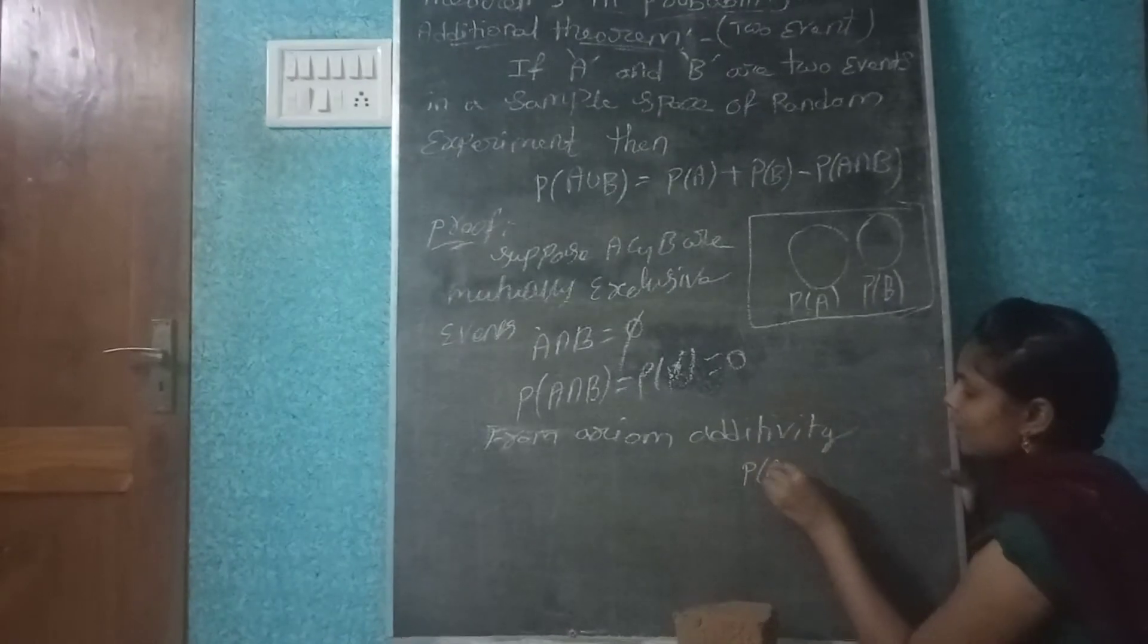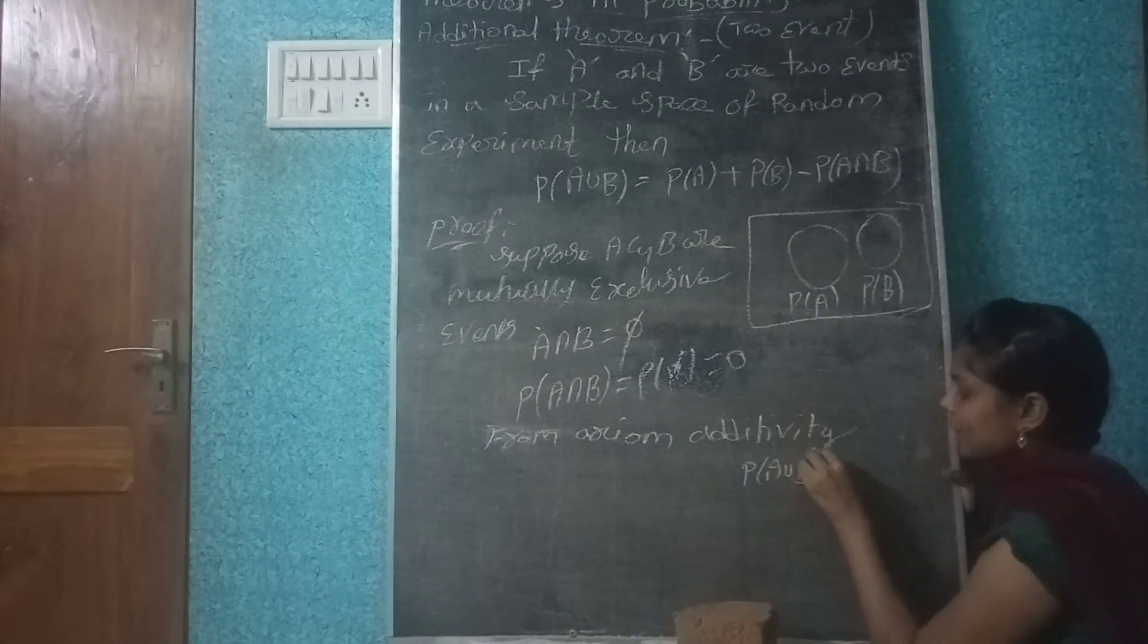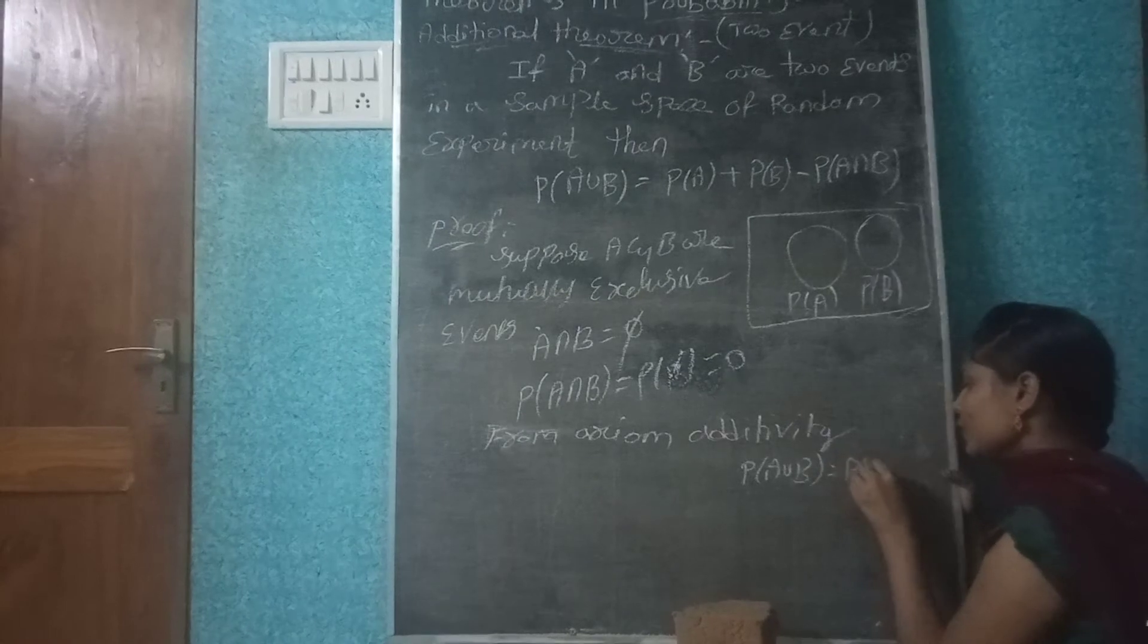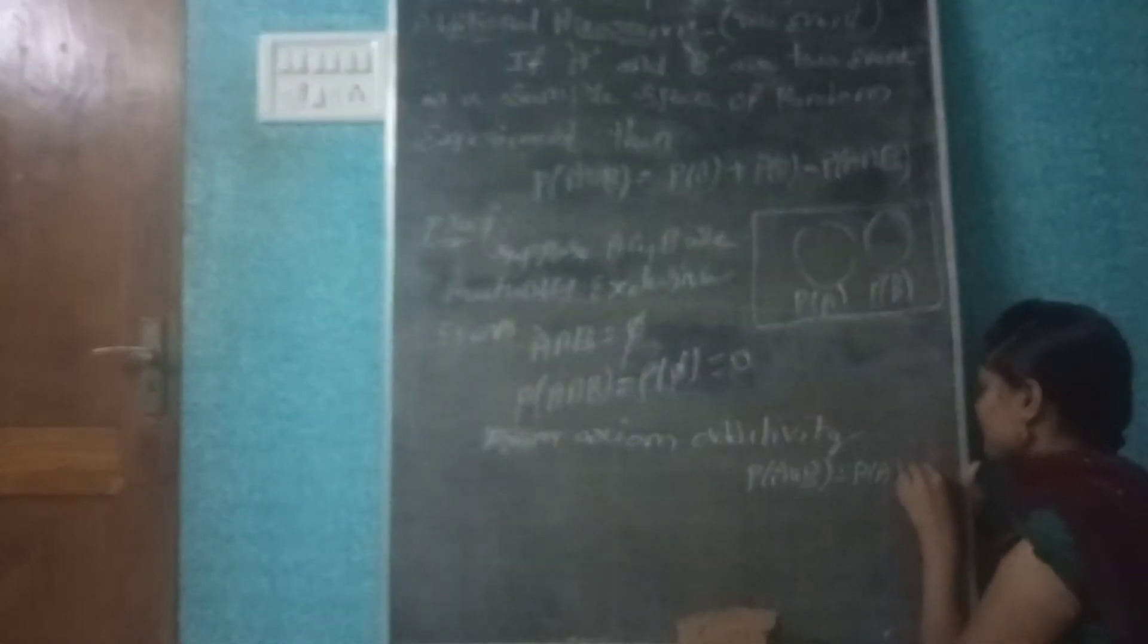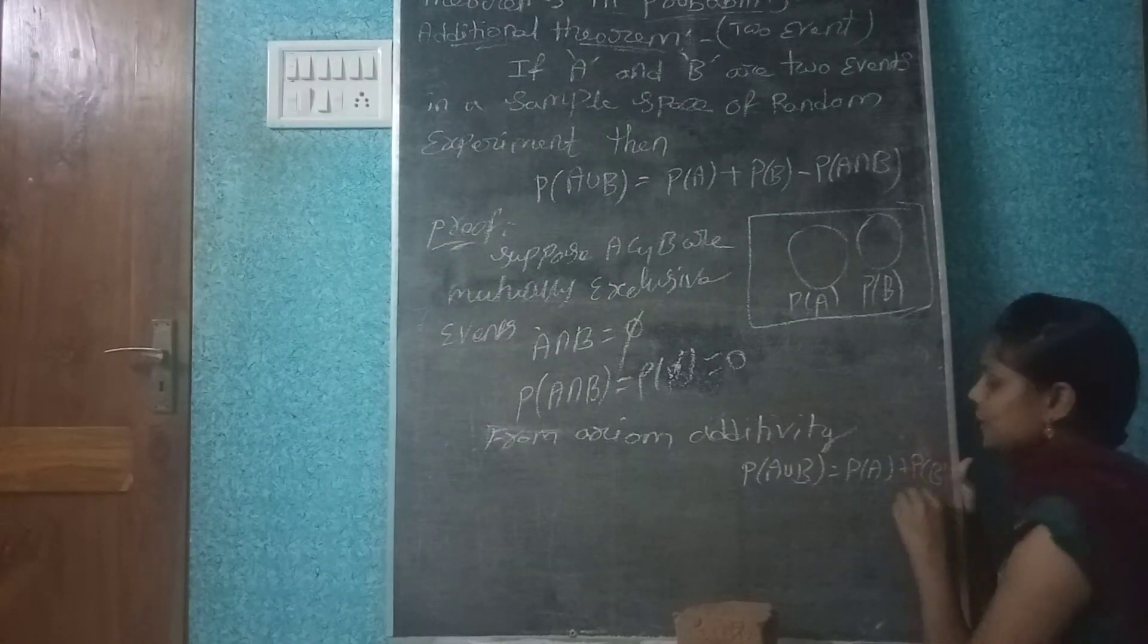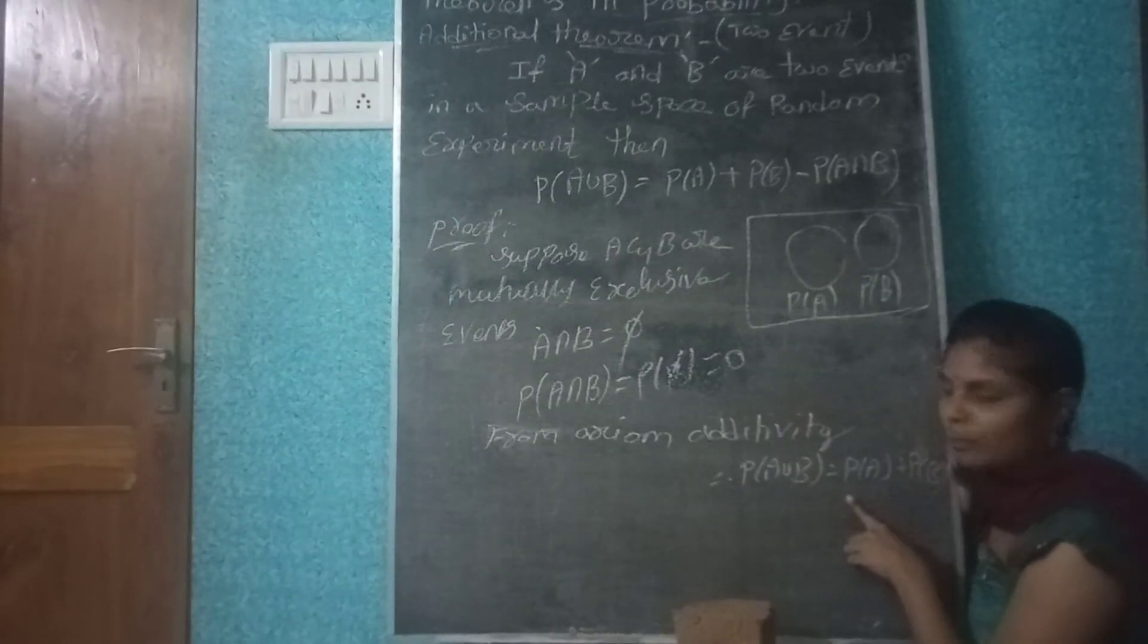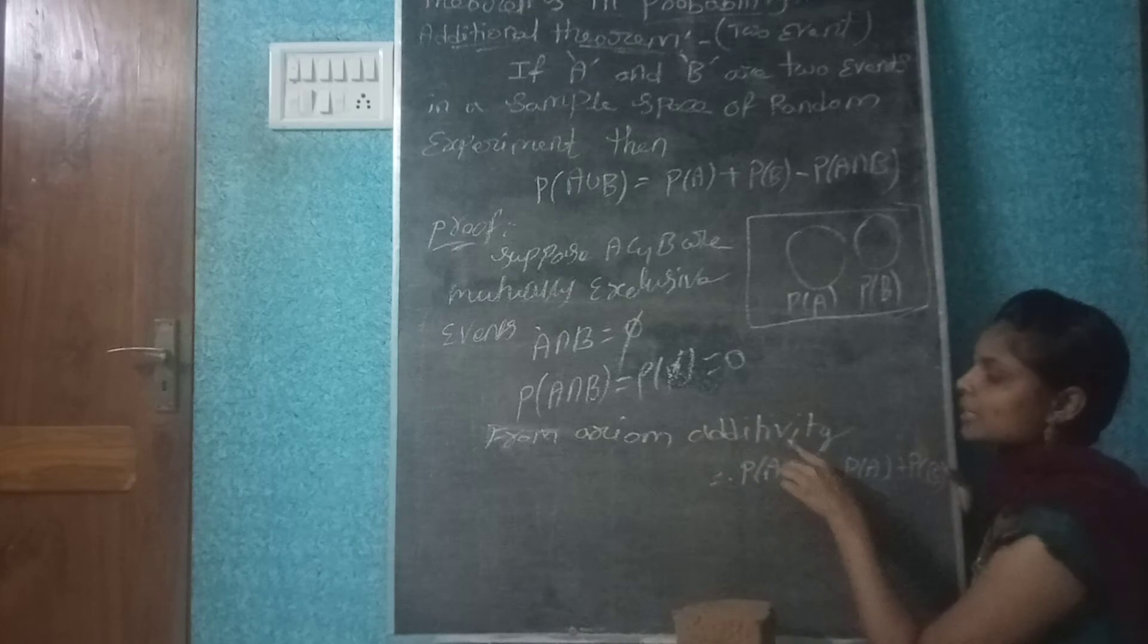P of A union B equals to P of A plus P of B minus 0. Additivity, already proven formula. So from the axiom of additivity,